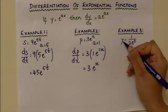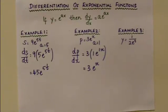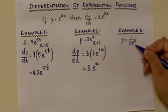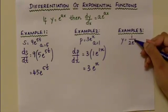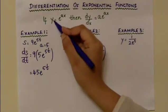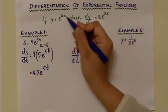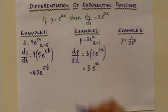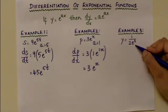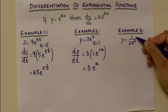In the next example, we are differentiating equation y with respect to the variable t. This case is slightly different because e to the power of t is in the denominator. It must be moved to the numerator, because the formula requires the exponential function to be in the numerator.